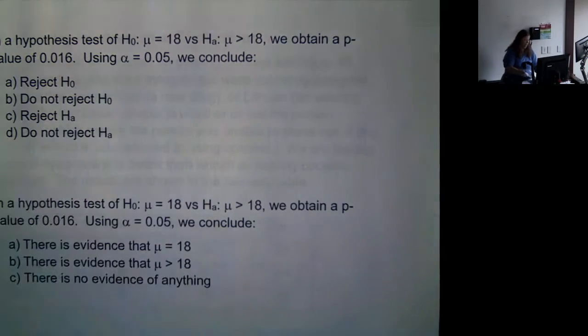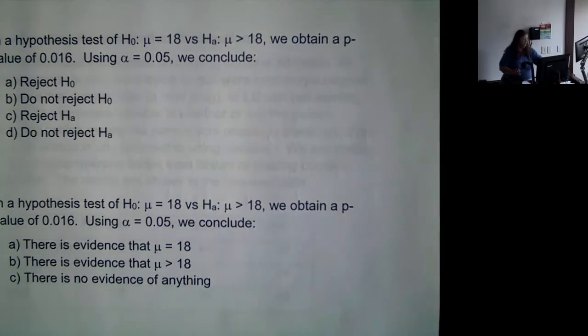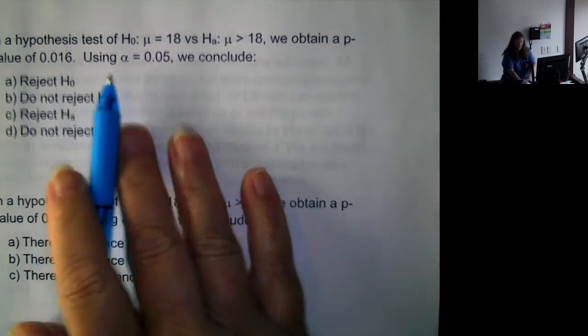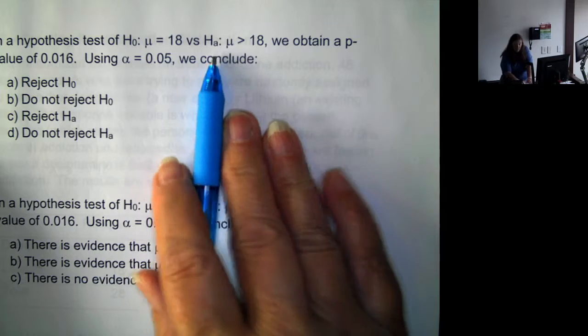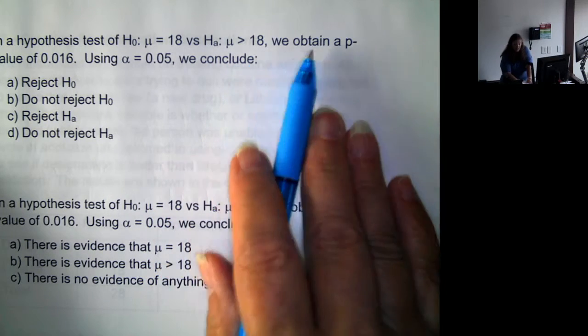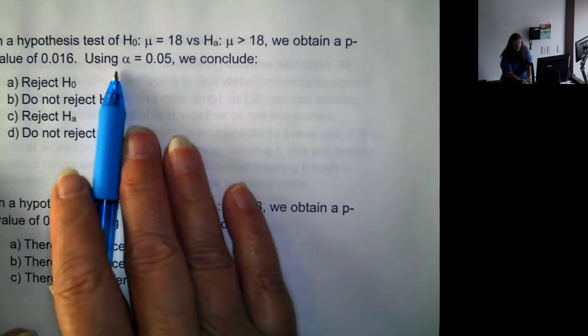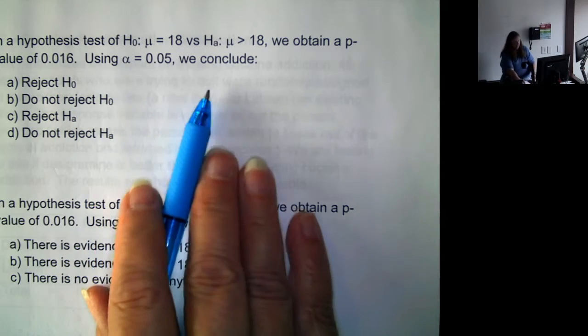So for the next one we're just looking at the wording of the generic conclusion. So in a hypothesis test H₀ is μ equals 18, Hₐ is μ is greater than 18. We obtain a p-value of 0.016 using α equal 0.05. What do we conclude?